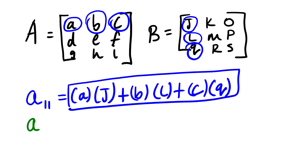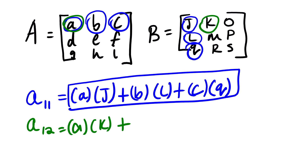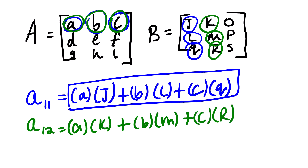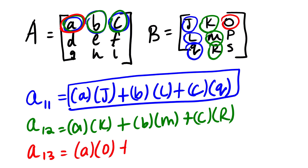Going to the next element, A12, we are still considering the first row and the second column. So we have A multiplied by K, plus B multiplied by M, plus C multiplied by R. I hope you can see the pattern. Now for A13, we are still looking at the first row and the third column, so it's A multiplied by O, plus B multiplied by P, plus C multiplied by S.